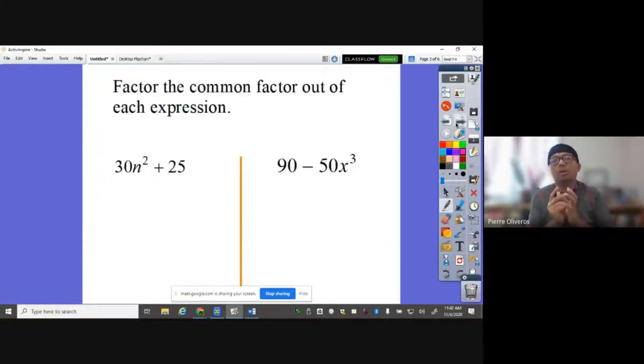So how do we factor out or factor using GCF? So we have 30n squared plus 25. What is the GCF of 30 and 25? The GCF of 30 and 25 is 5. Now, do both of them have n? No. So the GCF of this expression is just 5. So now we will draw parentheses here. We will divide this by the GCF, which is 5. 30 divided by 5 is 6. Drop the n squared because there's no n in our GCF, so drop the n squared. 25 divided by 5 is just going to be 5.